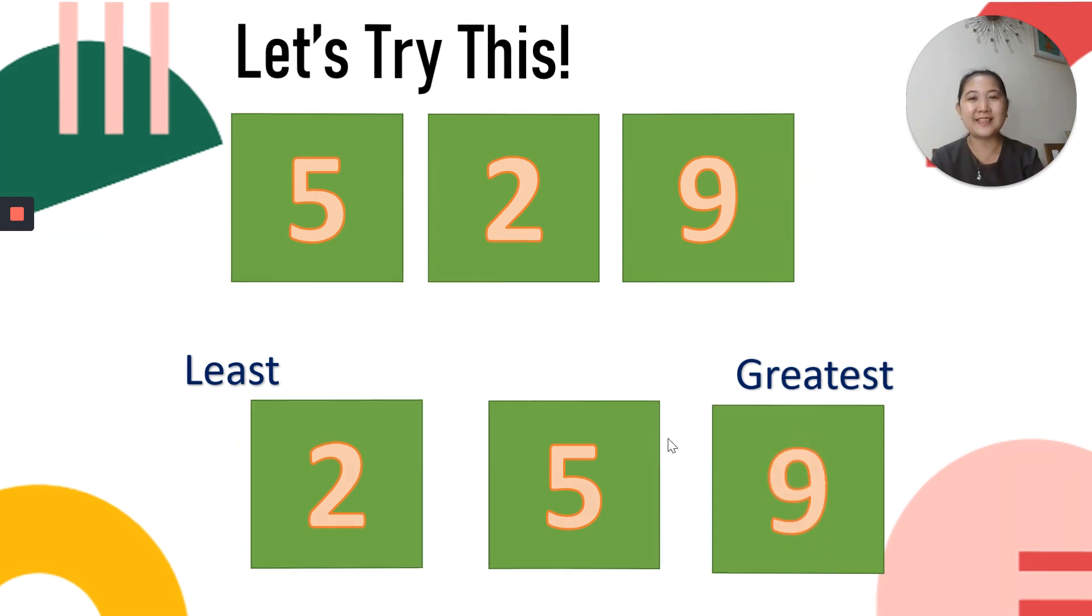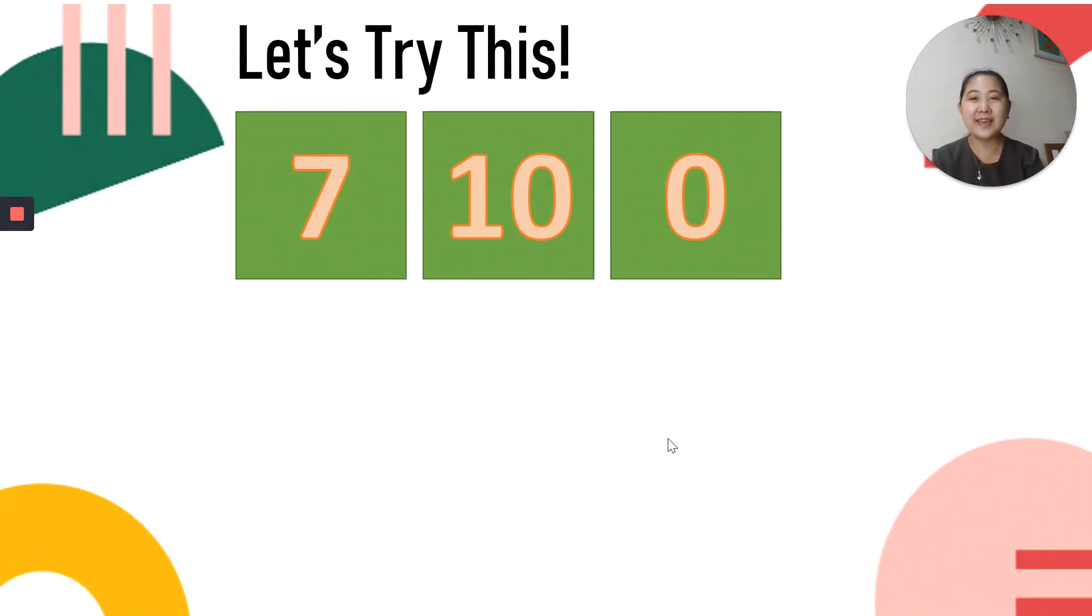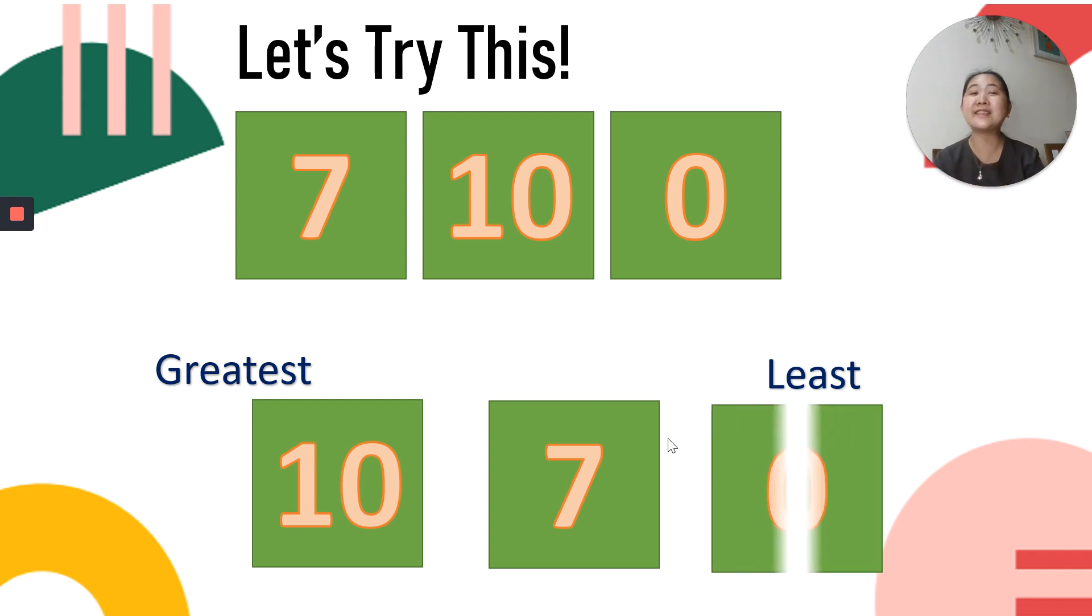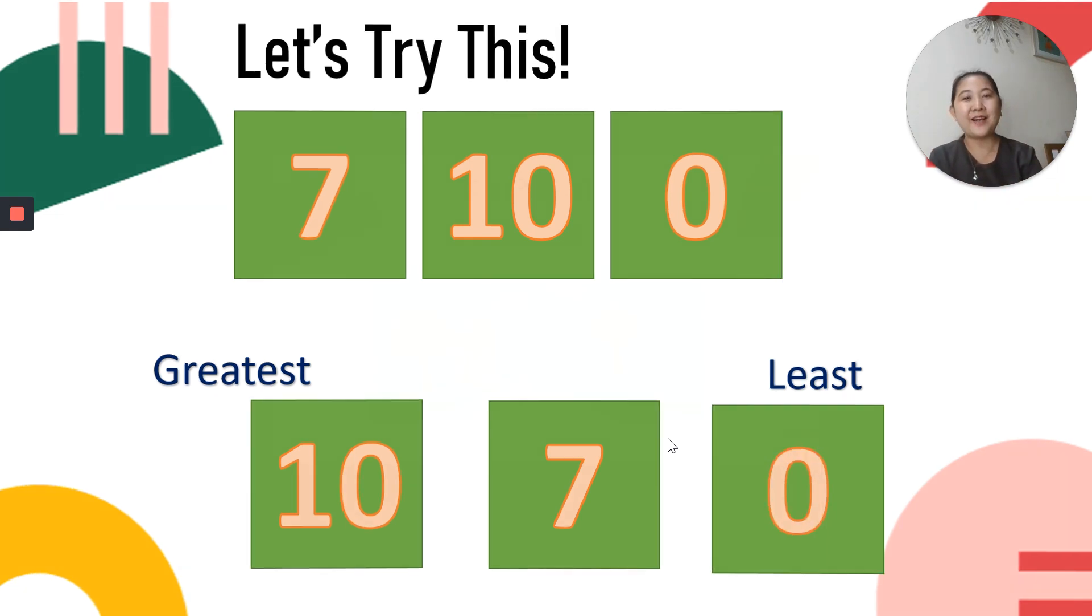Now let's have another one. Try this. Arrange these numbers from greatest to least. Which number should go first? Correct, it's 10. And lesser than 10 is 7, and then the least number is 0.